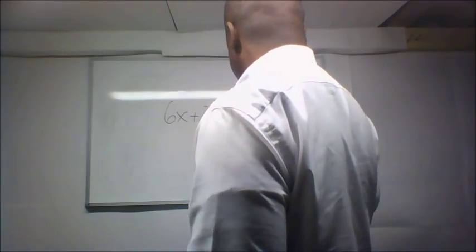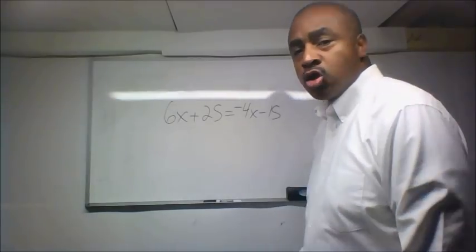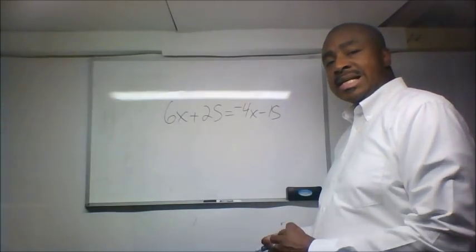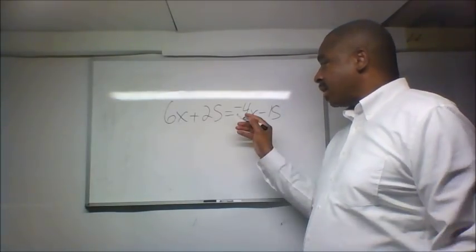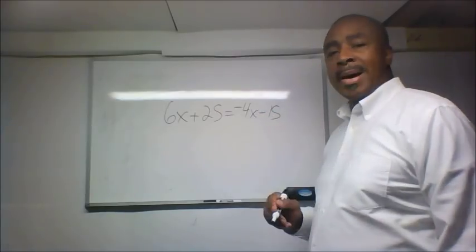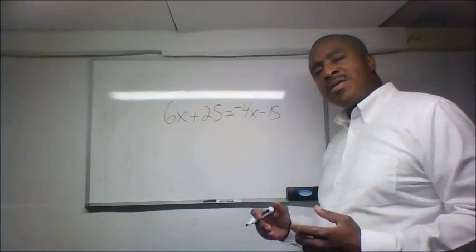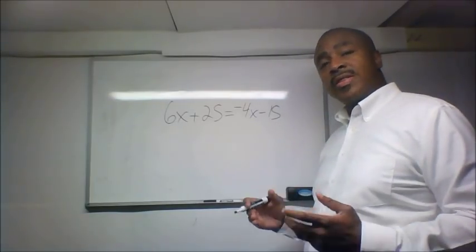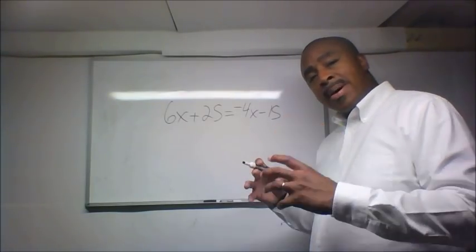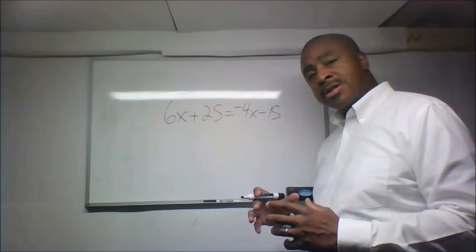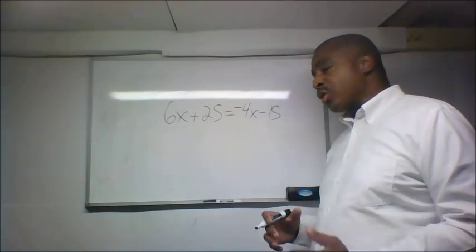So we have an equation here. 6x plus 25 equals minus 4x minus 15. And so to solve this, remember, solving for x is really all about doing the opposite. So you want to combine like terms, do the opposite, perform the operation, and get your answer.